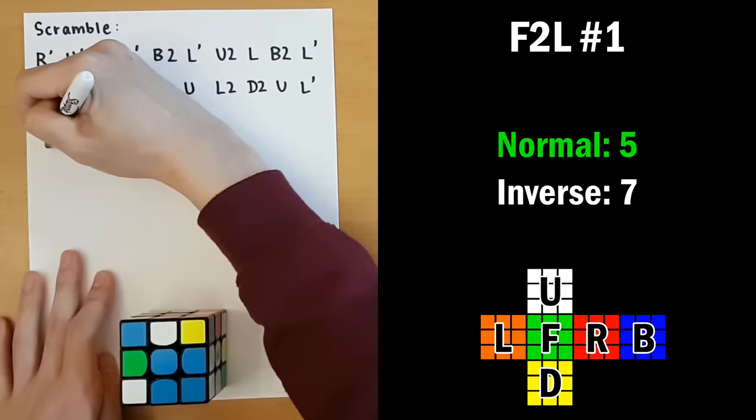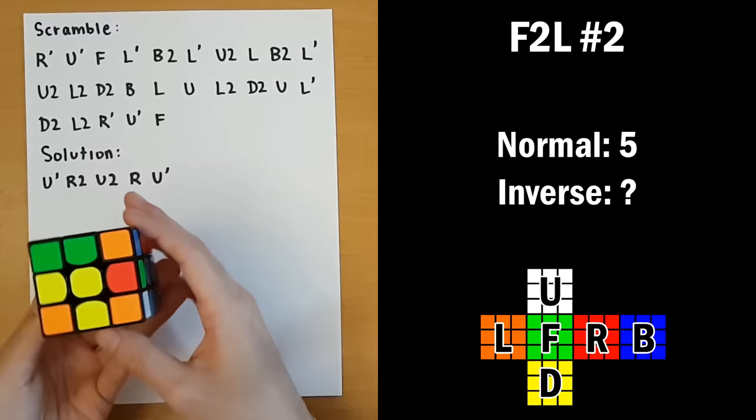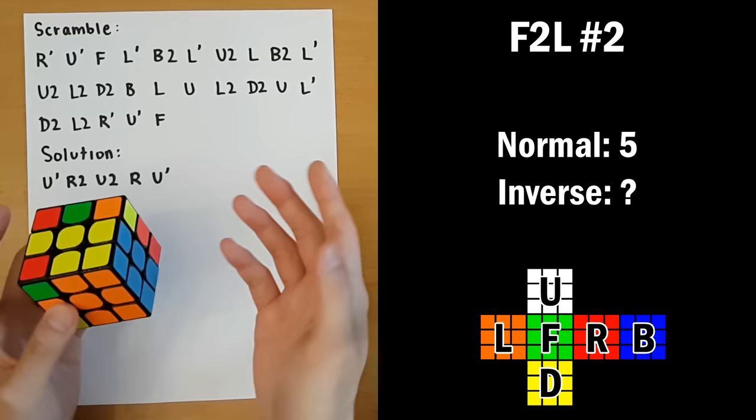So for the second F2L pair, I'll look for the shortest one I can find here, and I see this one and this one can be solved in five moves: 1, 2, 3, 4, 5. Not the normal way you'd do this F2L pair, but it's good to know short solutions like that sometimes. In the interest of time, I won't go back on the inverse. Five moves is very short. I will just write that down.